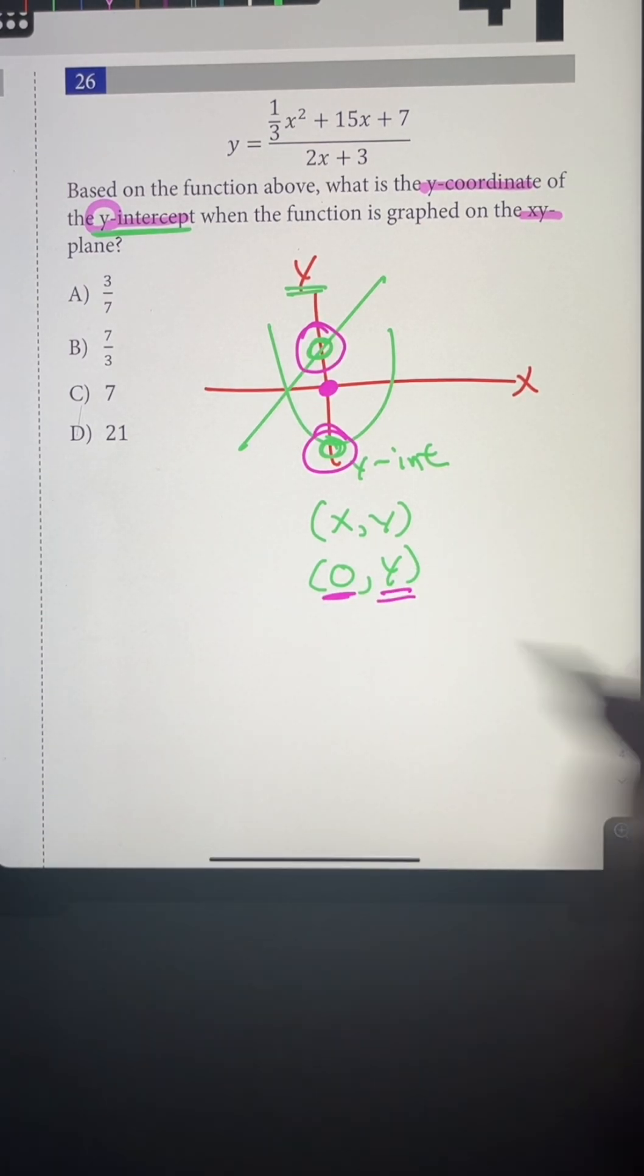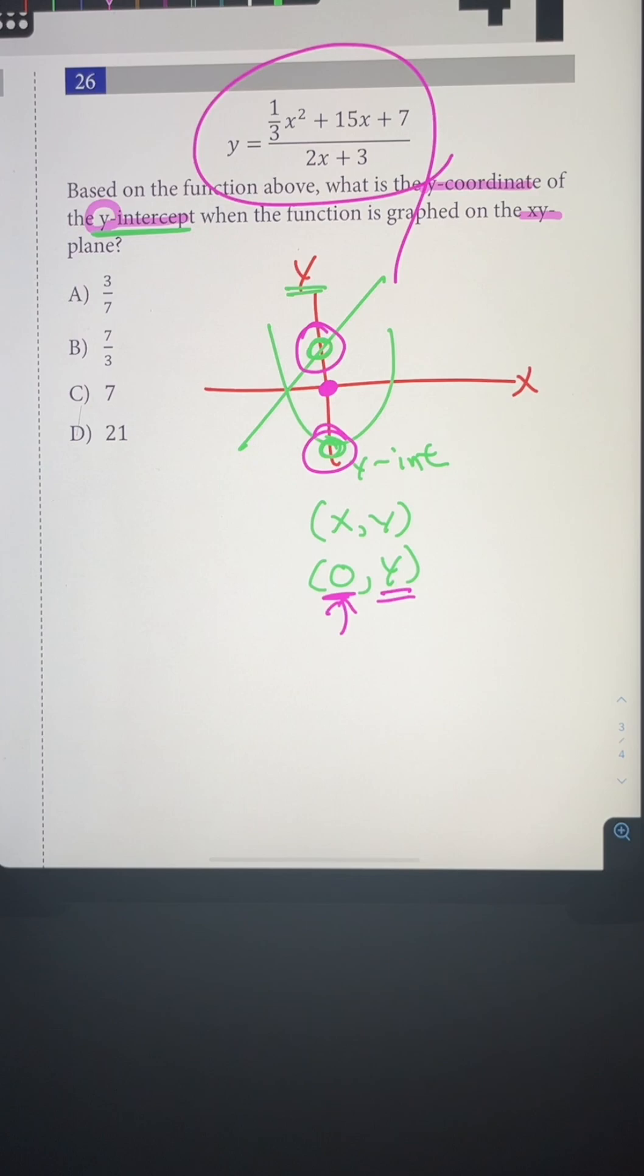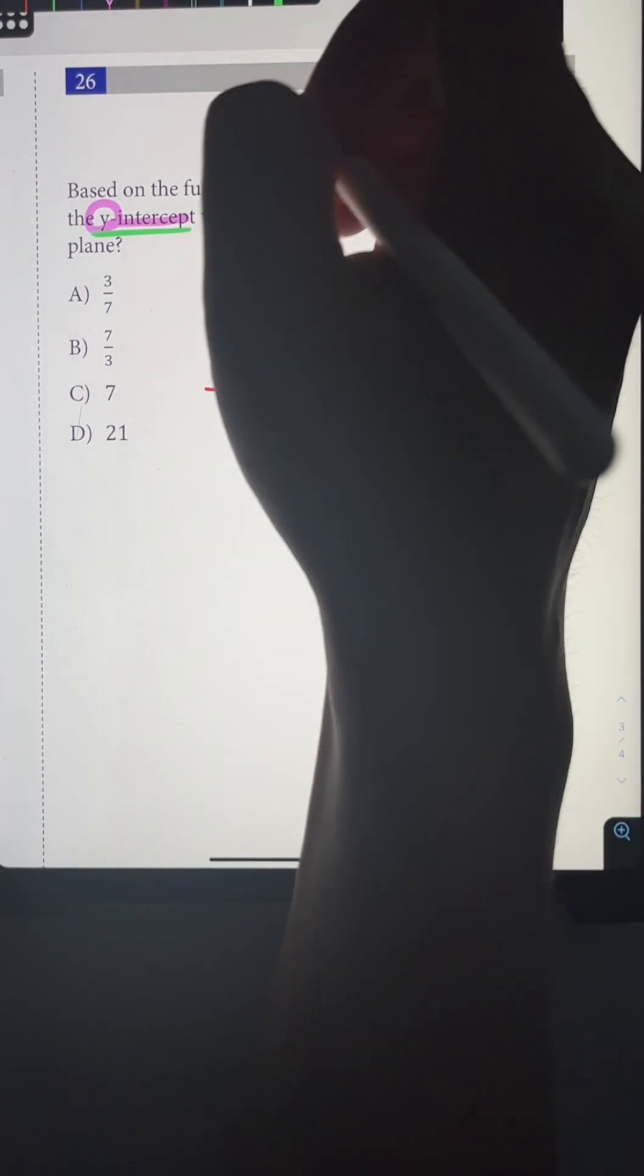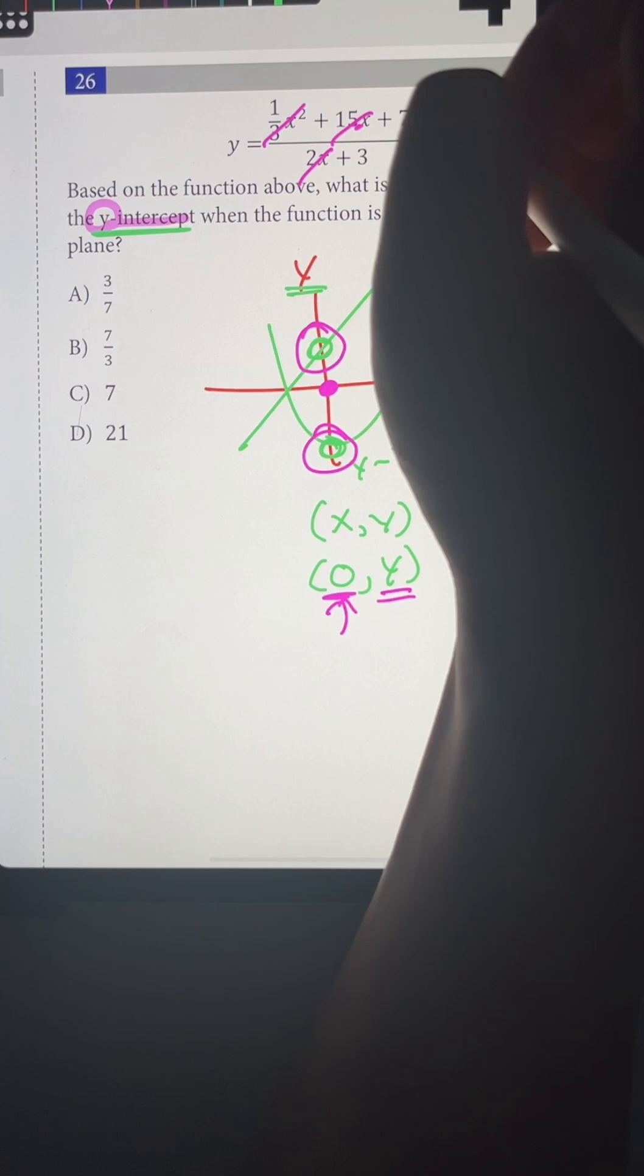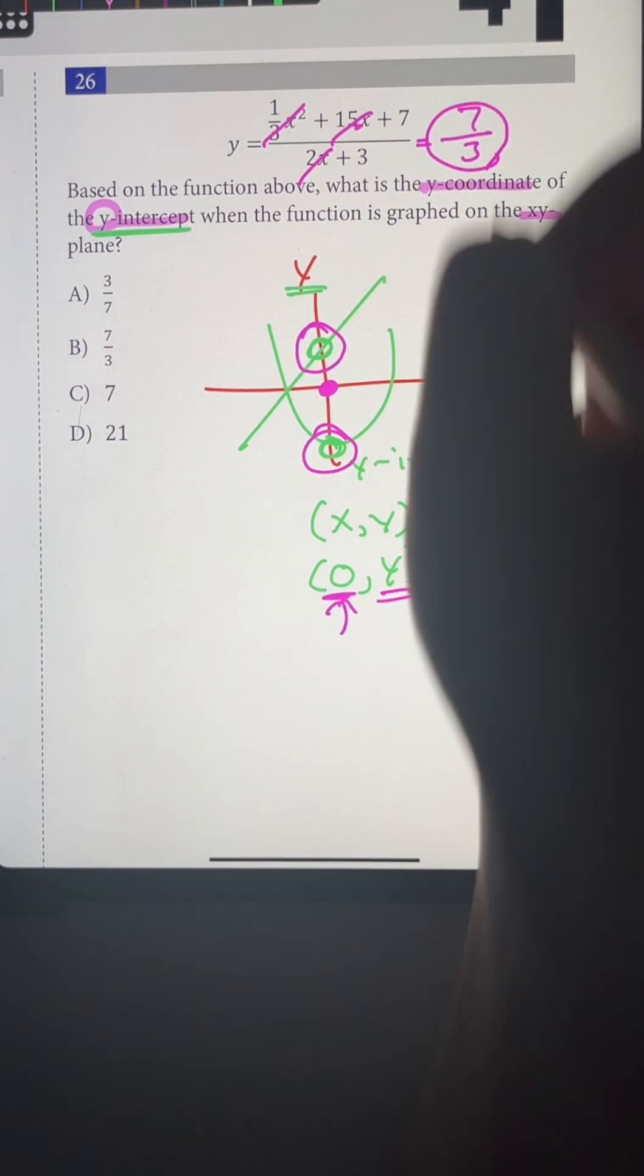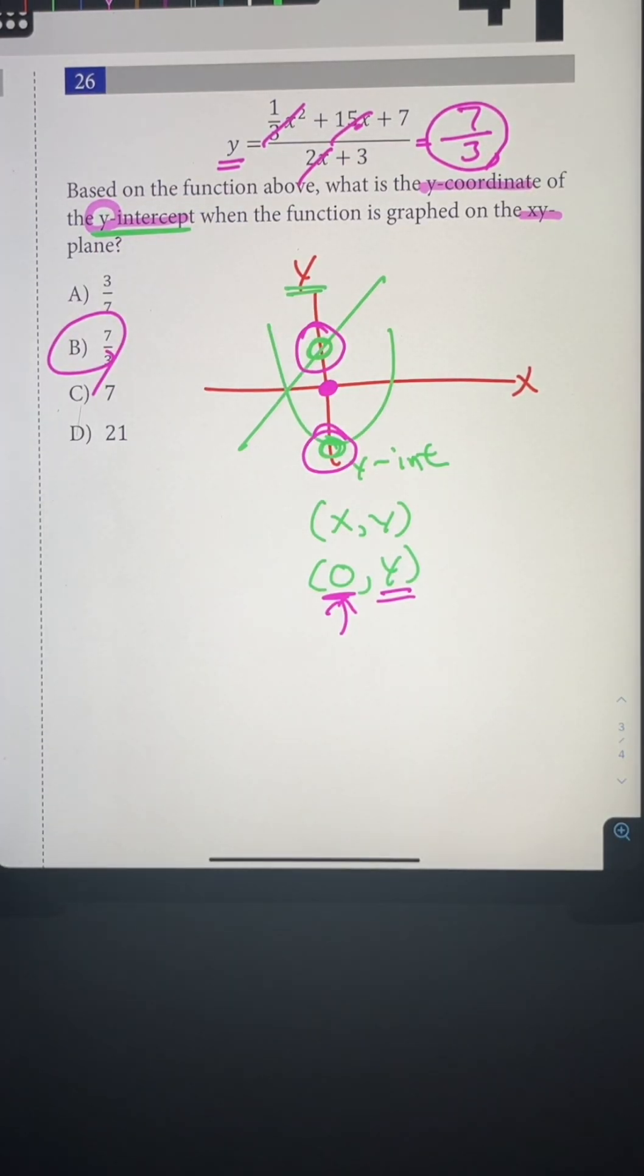So how do we find out the y value when x is equal to 0? All we need to do is just plug it in. When we plug 0 in, that's going to go away, that's going to go away, and that's going to go away, and we're only going to be left with 7 over 3, which means our y-coordinate is going to be equal to 7 over 3. Our answer is choice B.